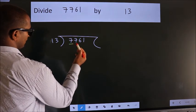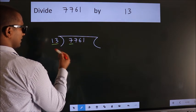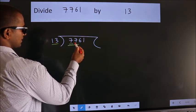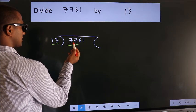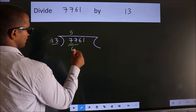Here we have 7. Here 13. 7 smaller than 13. So we should take two numbers, 77. A number close to 77 in 13 table is 13 fives, 65.